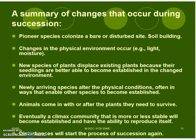A summary of changes that occurred during succession: the pioneer species colonize a bare or disturbed site. The soil begins to build. Changes in the physical environment occur, for example light and moisture. New species of plants displace existing plants because their seedlings are better able to become established in the changed environment. Newly arriving species alter the physical conditions, often in ways that enable other species to become established.